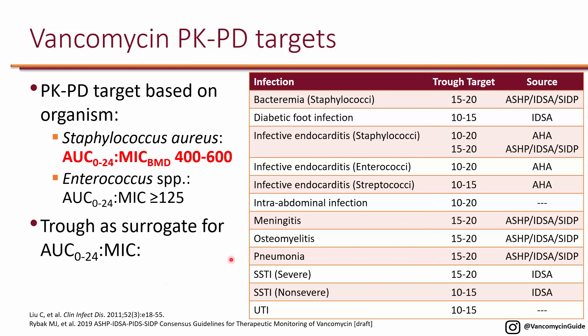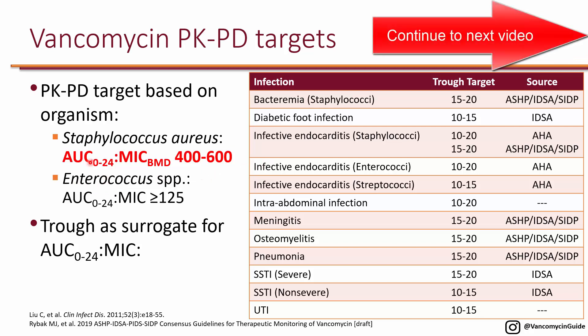In the future, it's likely that hospitals will slowly start to transition to targeting an AUC-to-MIC of 400 to 600 for Staphylococcus aureus specifically.